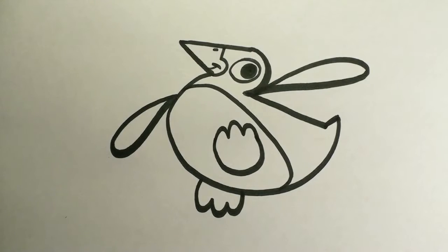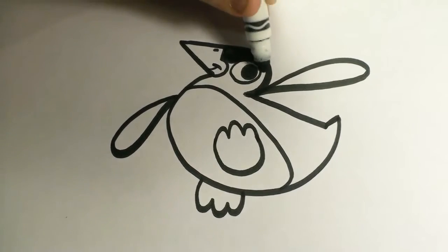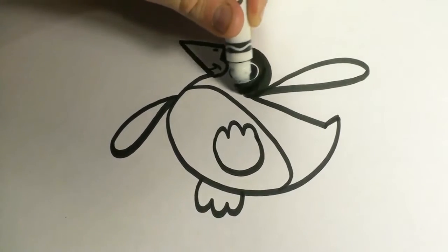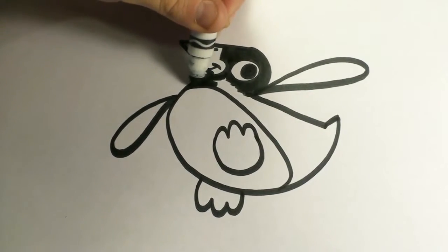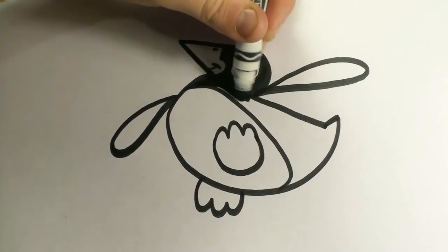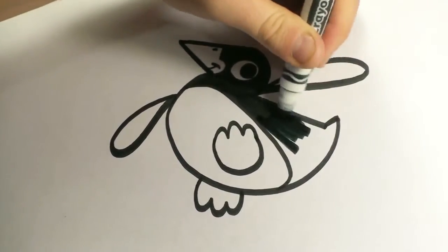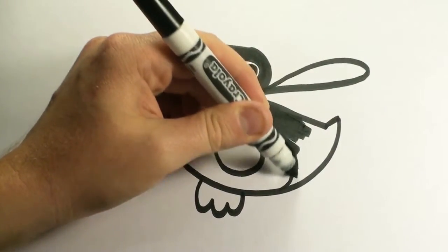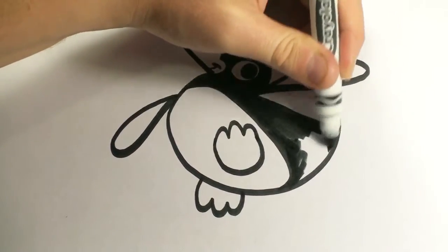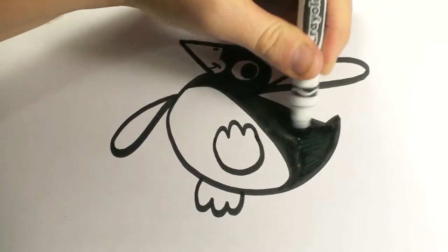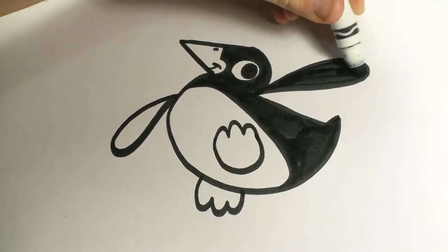Now since he's a penguin, he's going to be black and white. So we can go ahead and color them in using our marker. And if you don't want to use your marker, you're free to color them in with crayons, or watercolors, or however you like. If you don't want him to be a black penguin, you can make him purple, or pink, or green, or blue, because he's your penguin. So you're allowed to do whatever you want with him. Let your imagination run wild. Color in the wings as well.